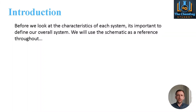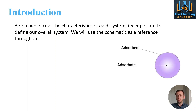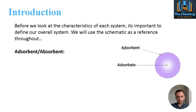Before we look at the key characteristics of each system, it's important that we define some key terms that we're going to use overall. We're going to use a very simple and basic diagram. This one here refers to the process of adsorption, but it would be exactly the same if it were for absorption as well. I'm going to use adsorption as the reference here, but the same thing applies to absorption.